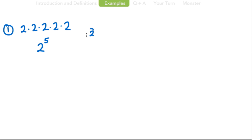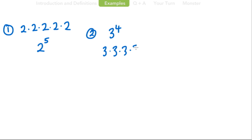Number 2: you might get a question and be asked to write it in factor form. If that's the case, you would write 3 times 3 times 3 times 3. That's your answer for 3 to the 4th power written in factor form.